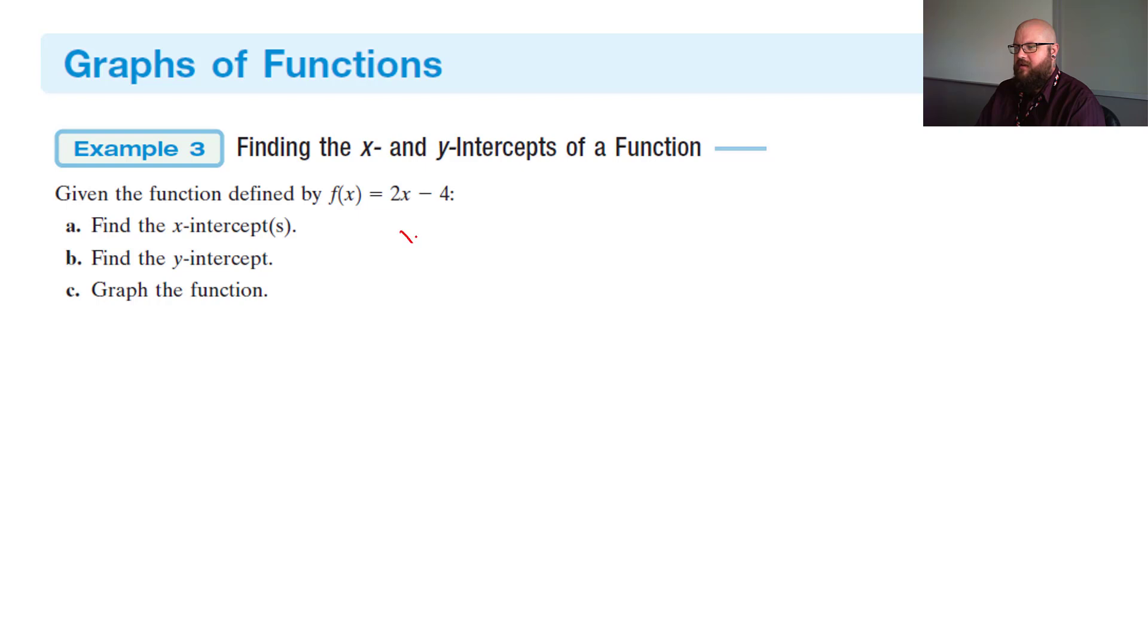It's the same thing. Well, and it said for x intercept to make the y = 0. Because whatever y is 0, that's where it's going to cross the x axis. So if we make y = 0, that's going to be 0 = 2x - 4.